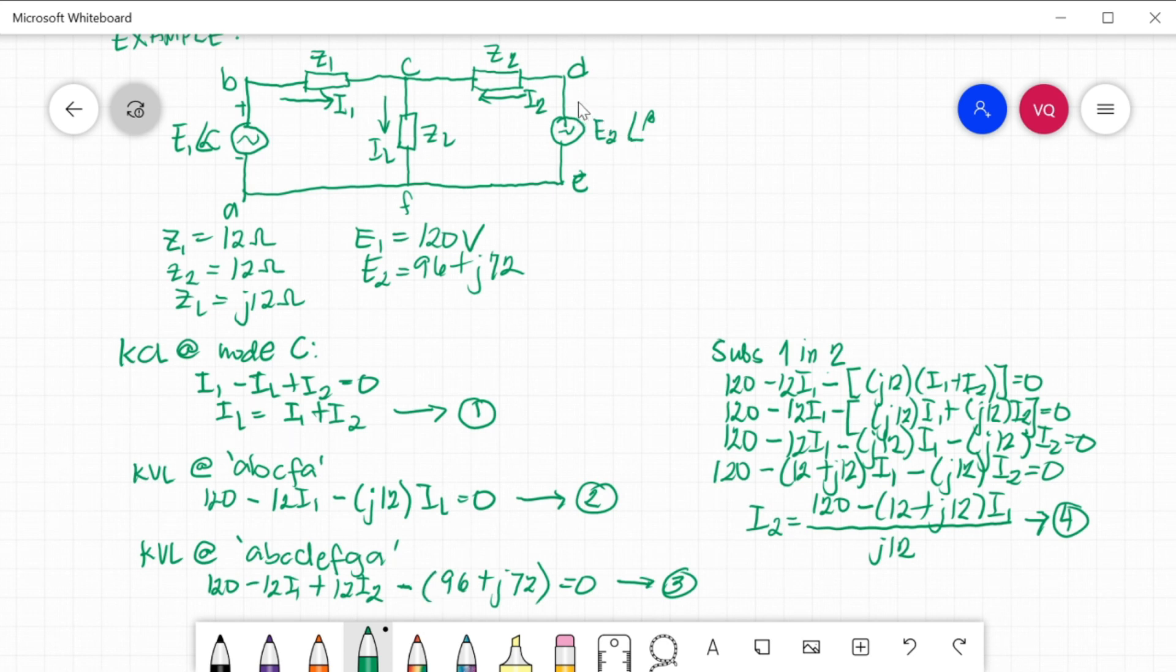It enters into a positive sign of your source. Itong D, E. So, minus the parenthesis of 96 plus J72 is equal to 0. Pag hindi mo ito linagyan ng negative, mag-iiba yung equation mo. It will not be the same as 96 plus J72. Always remember your parenthesis. Now, this will be my equation 3.